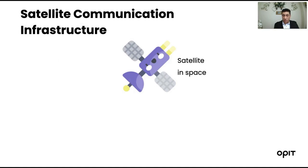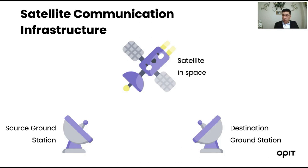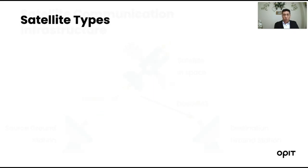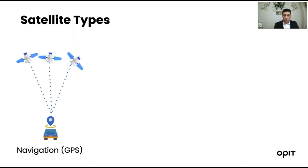The infrastructure of satellite communication networking has three primary parts: the satellite in space, the source ground station, and the destination ground station. The communication from the source ground station up to the satellite is called the uplink, and the communication from the satellite down to the destination ground station is called the downlink — two key terms to remember.